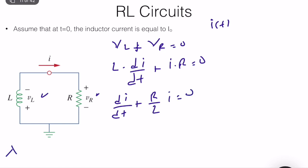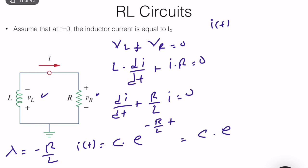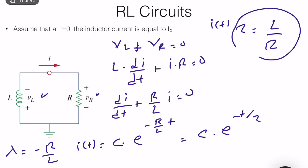Looking at the characteristic equation, λ = −R/L. So i(t) = C·e^(−R/L·t), which can be written as C·e^(−t/τ). The time constant τ = L/R for an RL circuit, where L is the inductance and R is the equivalent resistance.